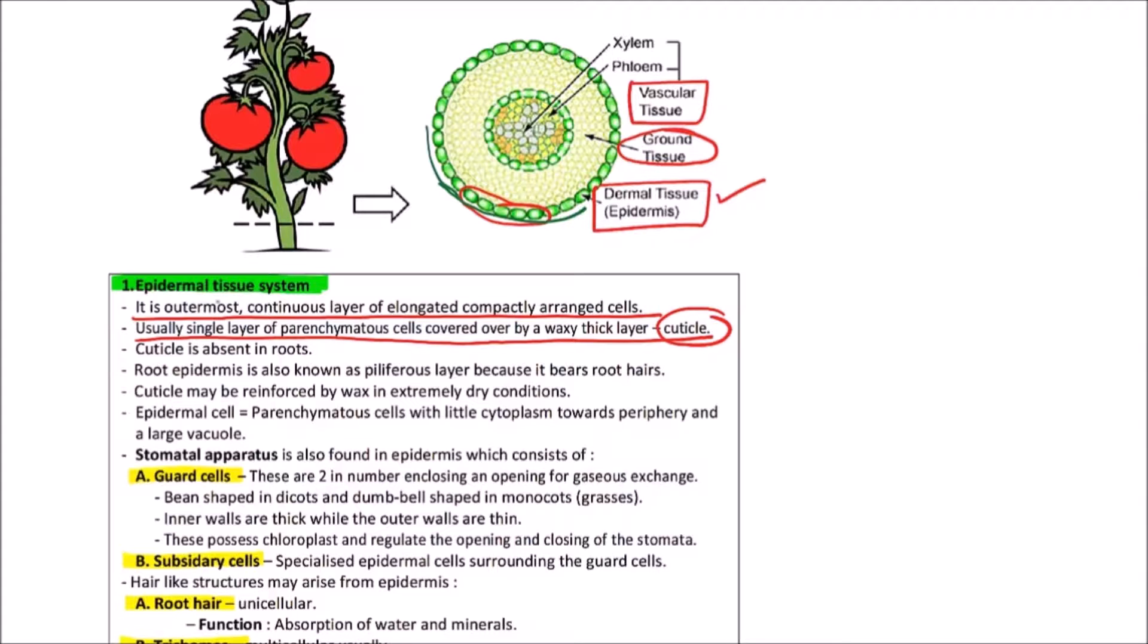Cuticle is absent in roots. In roots there is epidermal tissue system but it is not covered by cuticle. Root epidermis is also known as piliferous layer because it bears root hairs. Cuticle may be reinforced by wax in extremely dry conditions.